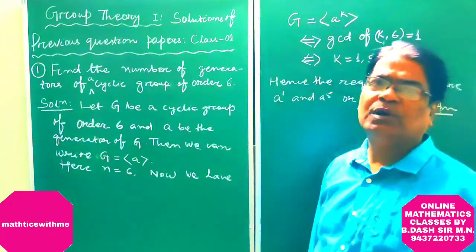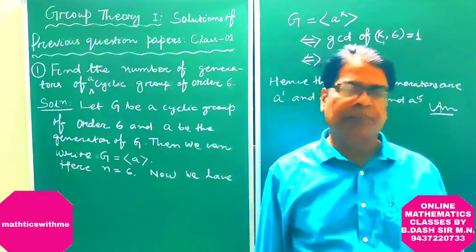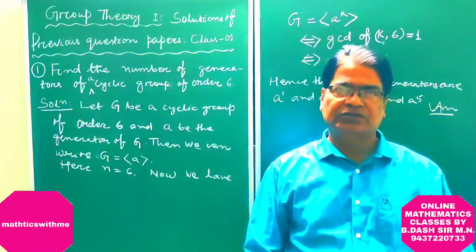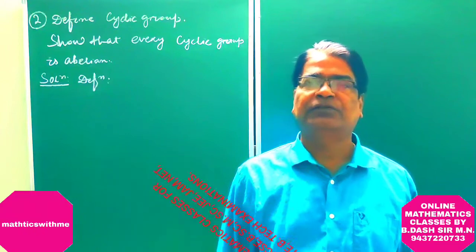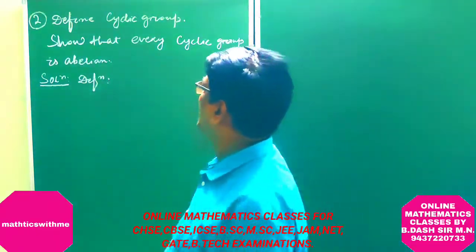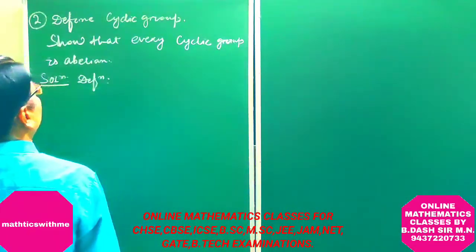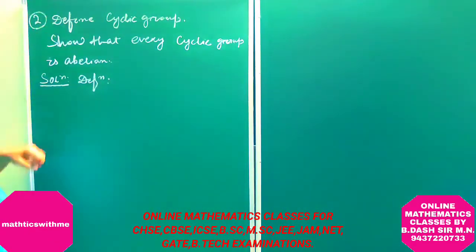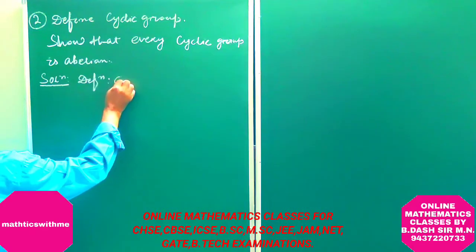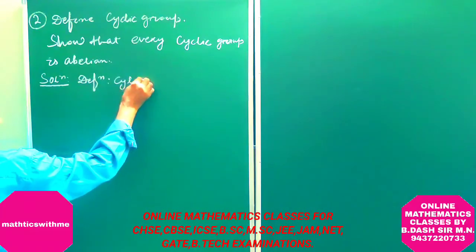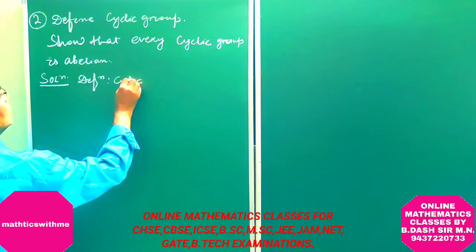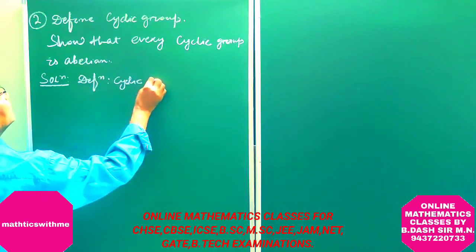So, our first question is solved. Let us proceed to the next question: define cyclic group and show that every cyclic group is abelian.